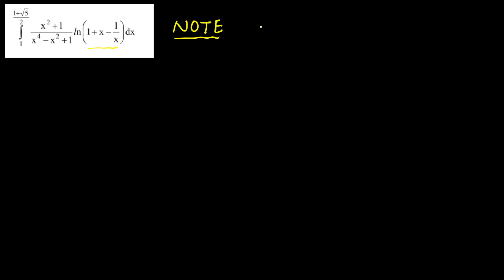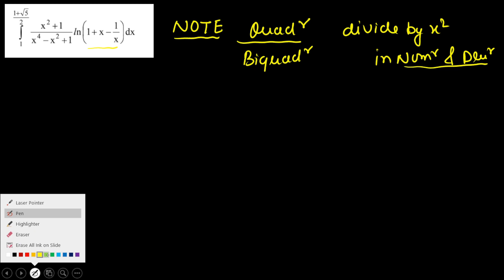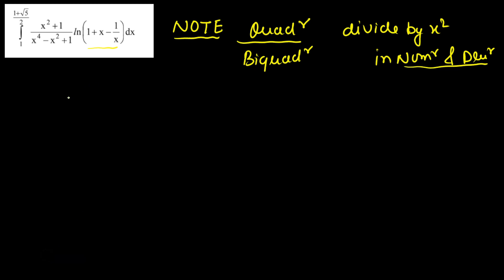As a note, in general you should remember that if we have a quadratic polynomial over a biquadratic polynomial, you have to try this approach. So whenever you see quadratic over biquadratic, you always divide by x² in the numerator and denominator — that is the standard move in most cases.